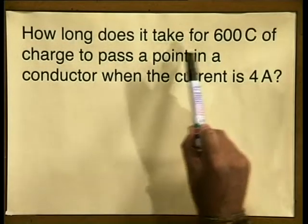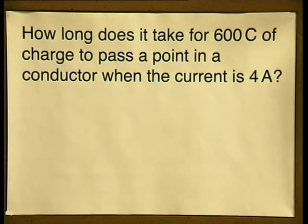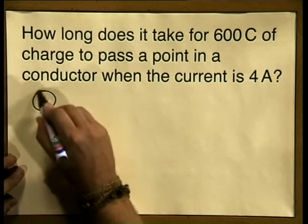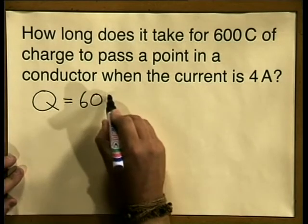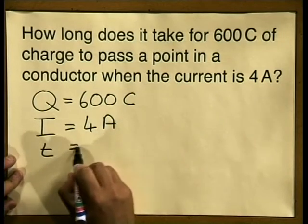You may well be asked in certain problems to rearrange the formula — for example, to calculate the time. How long does it take for 600 coulombs of charge to pass a point in a conductor when the current is 4 amperes? Let's write down our information: charge q is equal to 600 coulombs, current i is equal to 4 amperes, and t, my time taken, is unknown. We must take our base formula q is equal to i times t and rearrange it to make t the subject of the formula.